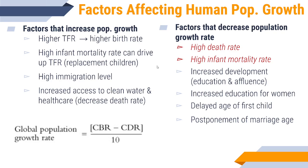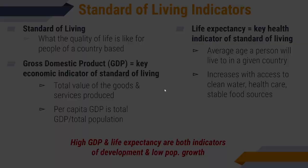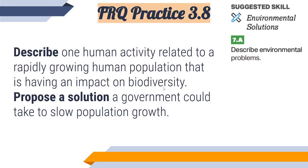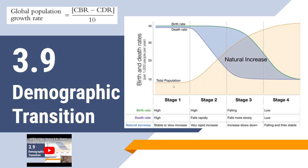Taking into account the factors that increase or decrease population growth rates: obviously more births leads to a higher growth rate, and higher death rates will decrease population. Populations grow faster the more they're able to stay alive. We'll talk about this more in demographic transition.